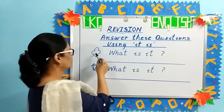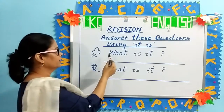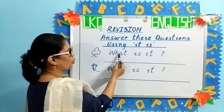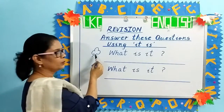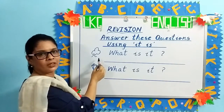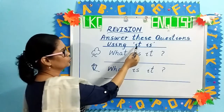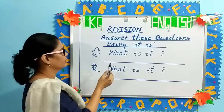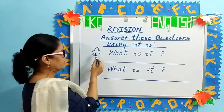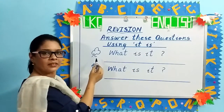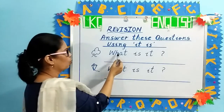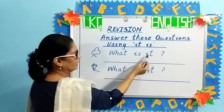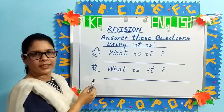So you have pictures here and the question is: what is it? You will look at the picture and your answer will be using 'it is.' Your answer will be: it is a tree. What is it? It is a tree.